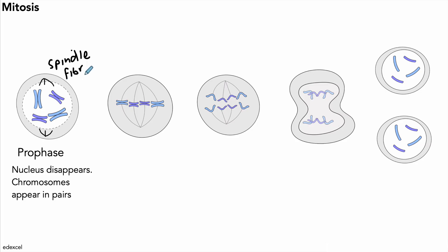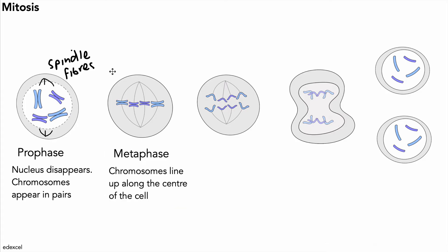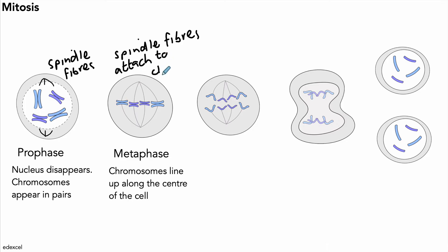The next stage is called the metaphase. In the metaphase, the chromosomes line up along the center of the cell — sometimes called the equator of the cell. The spindle fibers attach to the chromosomes at a very specific place, right in the middle or close to the middle of the chromosome, called the centromere.